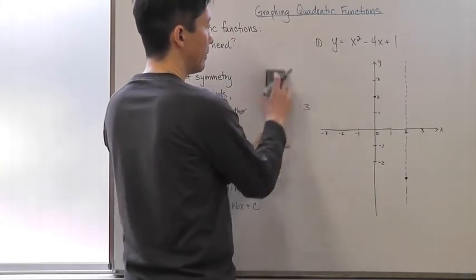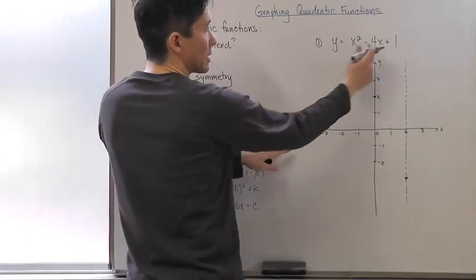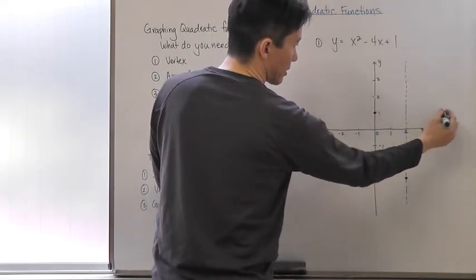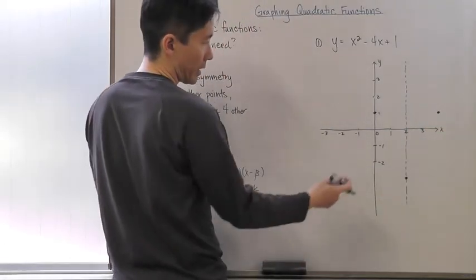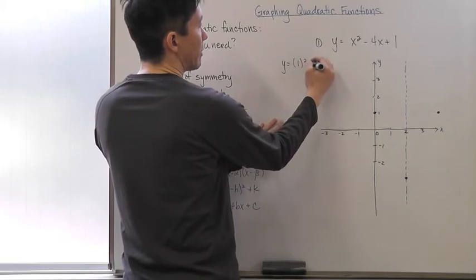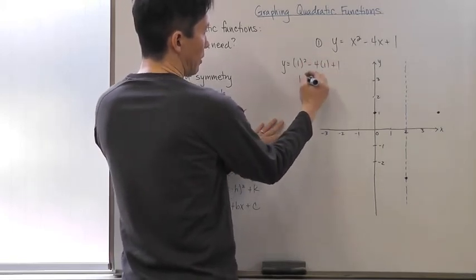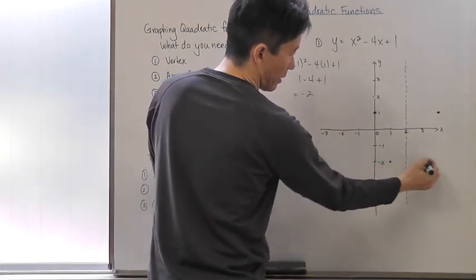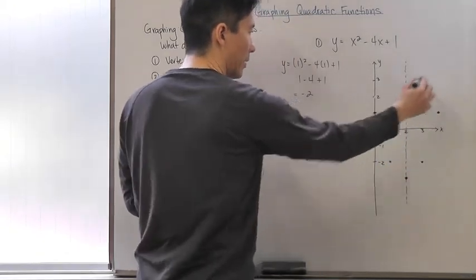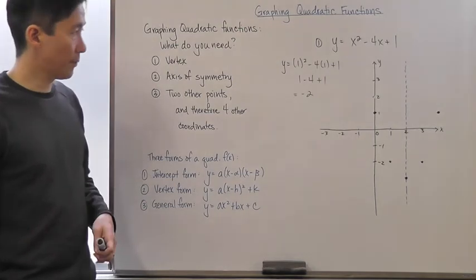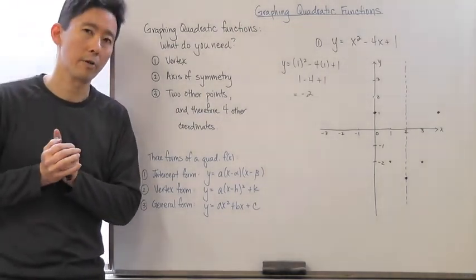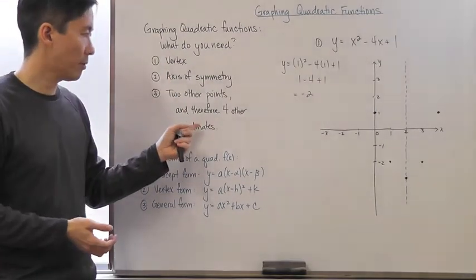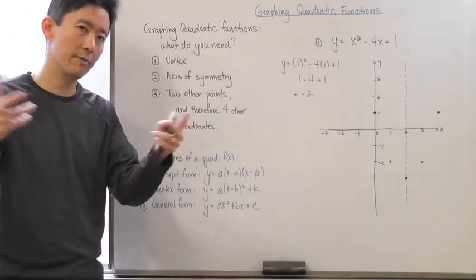Now I just need two other points. The y-intercept is always easiest — that's just one, so the point (0, 1) is on the graph. By symmetry, (4, 1) is also on the graph. Let x equal one: y equals one minus four plus one, which equals negative two. So the point (1, negative two) is on the graph, and by symmetry, (3, negative two) is also there. Now I can graph the parabola.